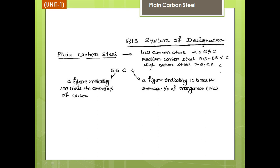Plain carbon steel is designated by a specific format. This is an example of plain carbon steel: 55C4. Capital C stands for carbon. Here is how this figure is derived.